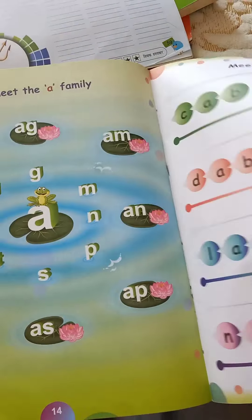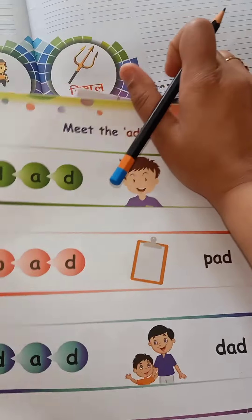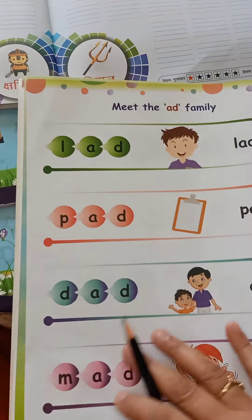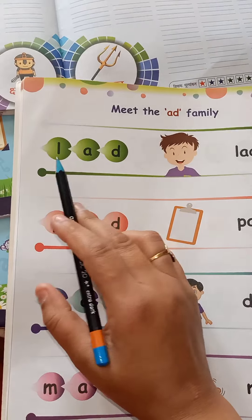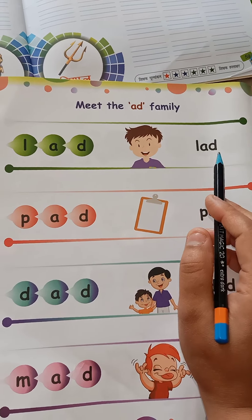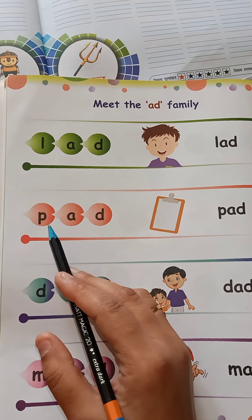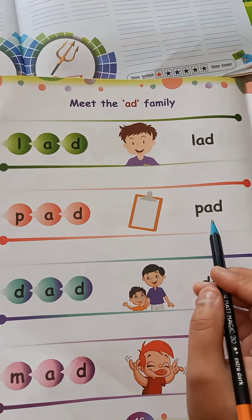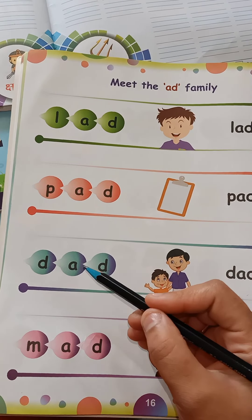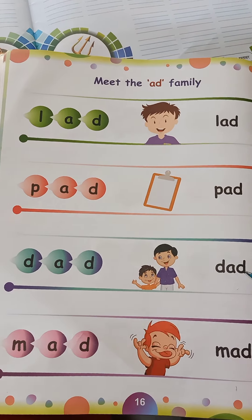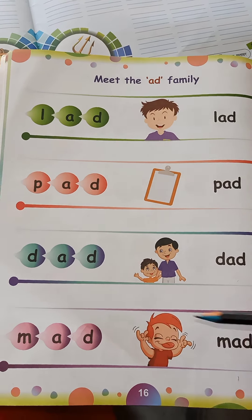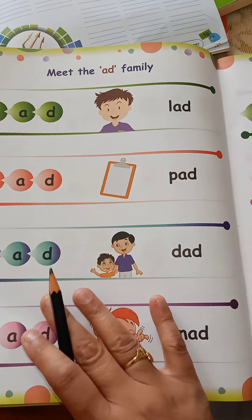Turn over the page. Meet the A family. So let's start. L, ab — let. P, ab — pet. D, ab — dad. N, ab — mat.